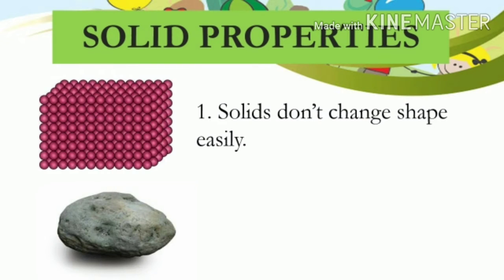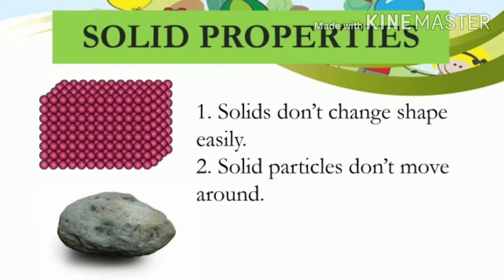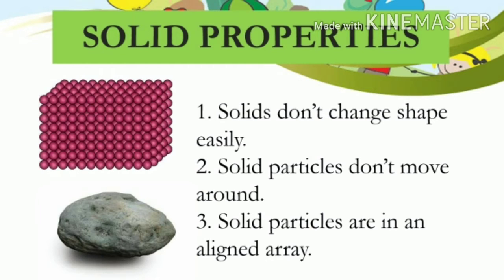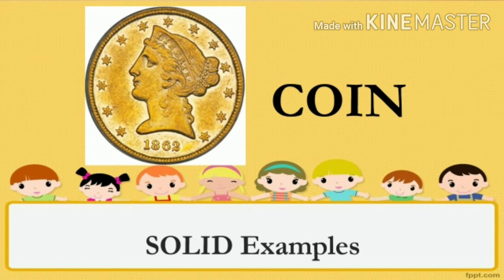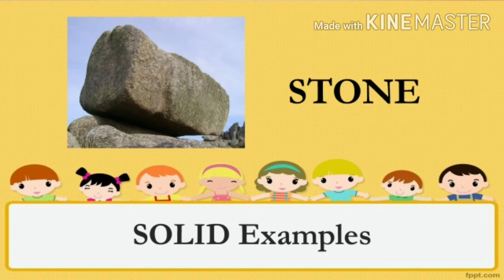First is solid. Solids don't change shape easily. For example, if you put a stone inside a square container, the stone will not change its shape — the shape of the stone will remain the same. Solid particles don't move around. Unlike other phases of matter, the particles of solid are not free; they are in an aligned array, organized and structured. Examples of solids are wood, coin, stone, and more.